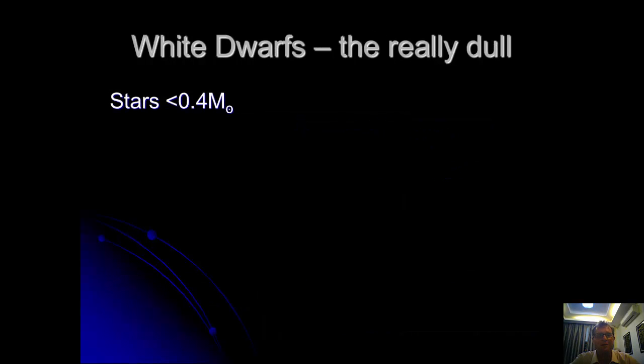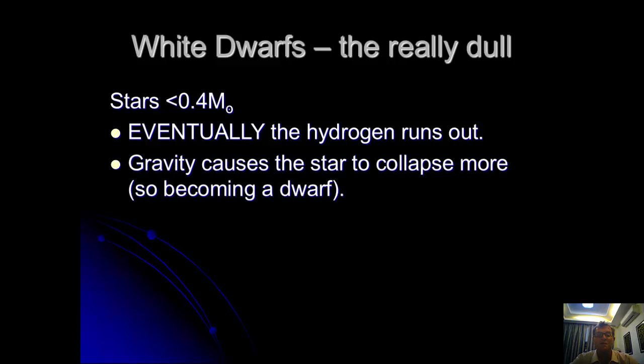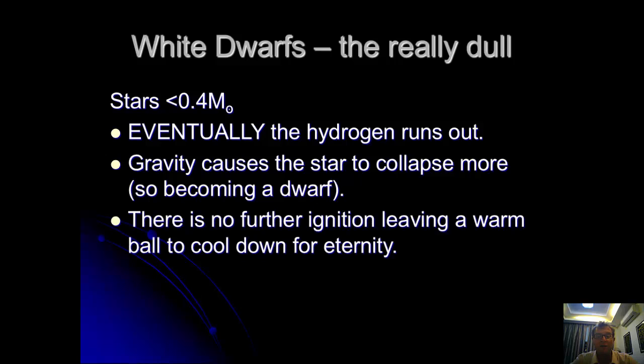Let's now think about stars which are really small. A star which has a mass of under 0.4 that of our Sun, where eventually the hydrogen runs out. Once the hydrogen runs out, gravity causes the star to collapse, becoming a dwarf. Nothing else really happens. There's no further ignition. We have this little warm ball which cools down for an eternity. It's a white dwarf, and eventually that remnant heat goes away, finally becoming a dark brown dwarf.